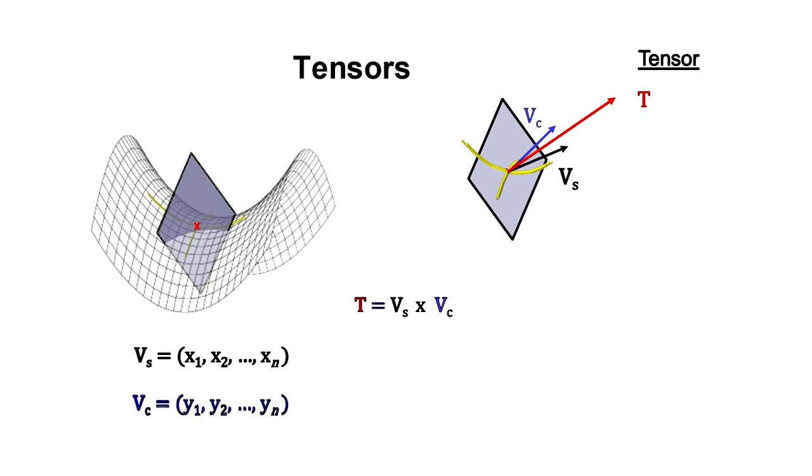The power of tensors lies in two basic characteristics. First, they carry a great deal of information. And second, they are invariant when the coordinate systems are changed. In other words, they remain constant across all kinds of changes in how we are looking at any particular situation.